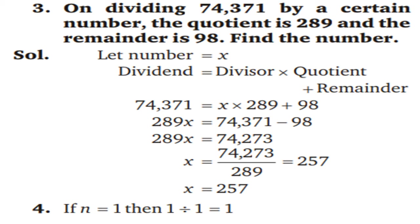Question 3: on dividing 74,371 by a certain number, the quotient is 289 and the remainder is 98. Find the number. Let the number equal x. Put the formula: dividend = divisor × quotient + remainder. So 74,371 = x × 289 + 98. Then 289x = 74,371 − 98 = 74,273. Therefore x = 74,273 ÷ 289 = 257.